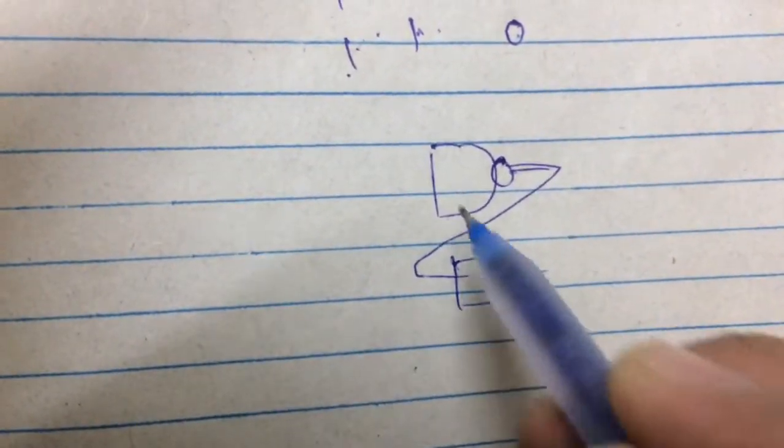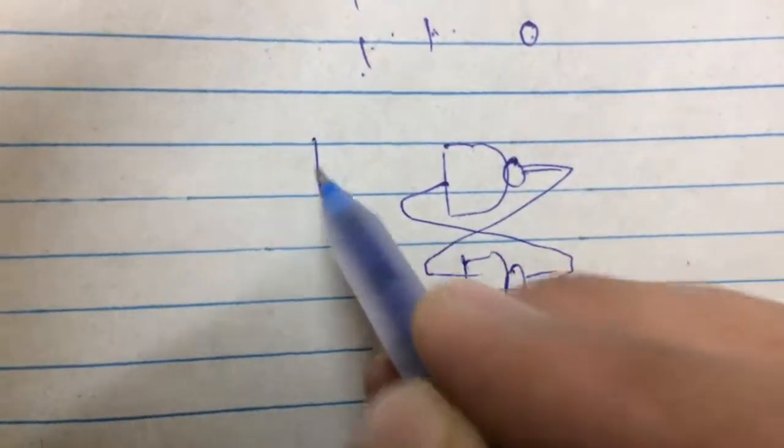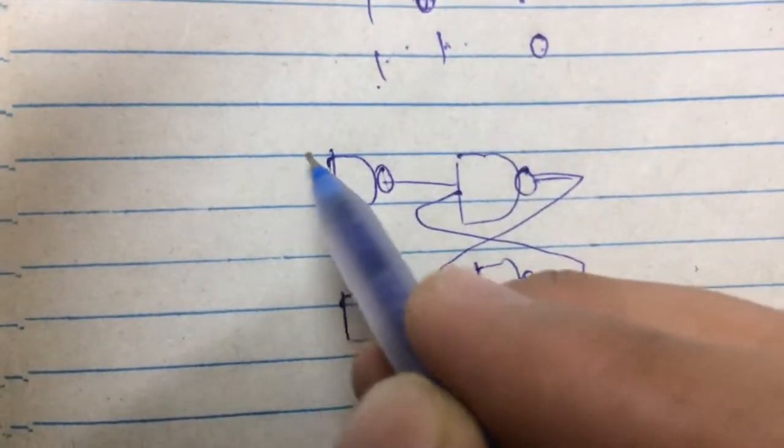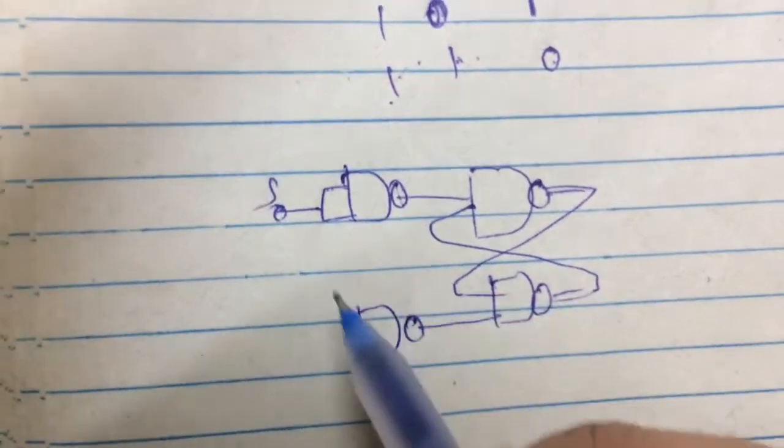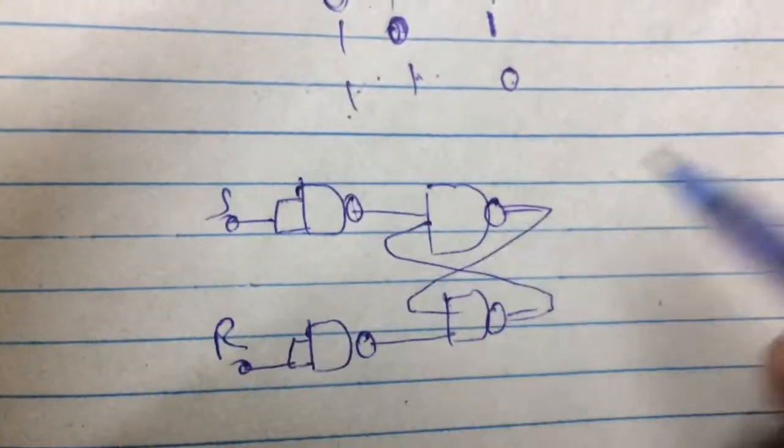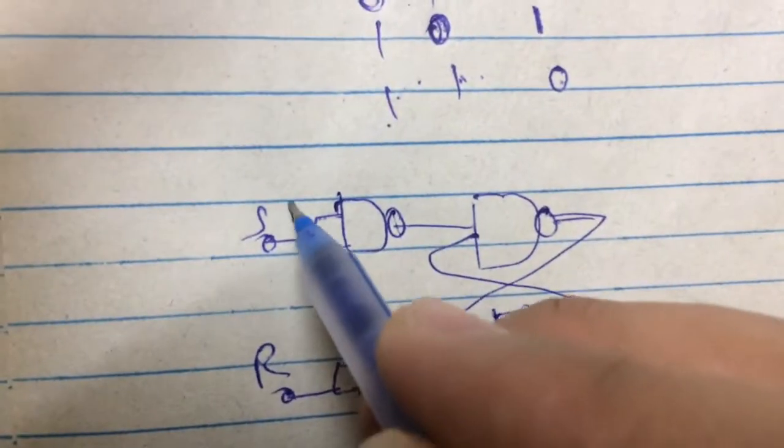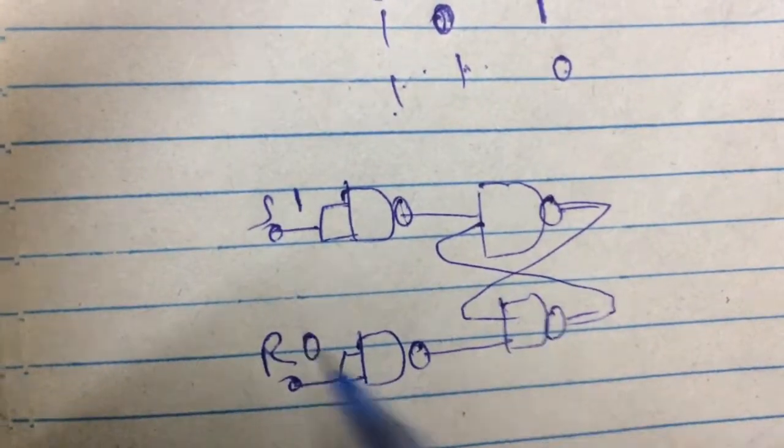So again, I rewrite the figure. And here I connect S and here I connect R. Now our case for study is 1 and 0. So you can write here 1 and you can write here 0.